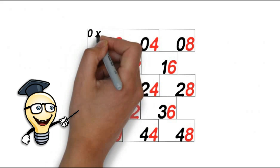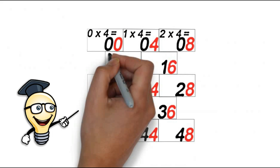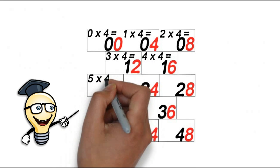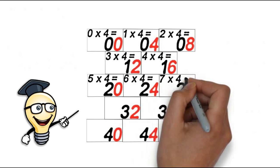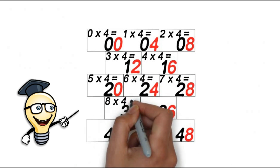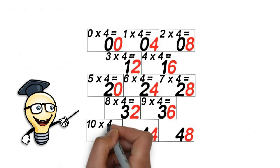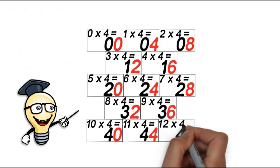So we've got 0 x 4 is 0. 1 x 4 is 4. 2 x 4 is 8. 3 x 4 is 12. 4 x 4 is 16. 5 x 4 is 20. 6 x 4 is 24. 7 x 4 is 28. 8 x 4 is 32. 9 x 4 is 36. 10 x 4 is 40. 11 x 4 is 44. And 12 x 4 is 48.